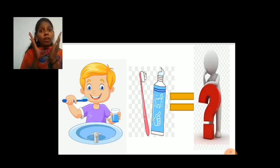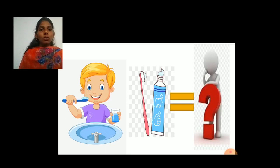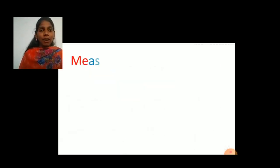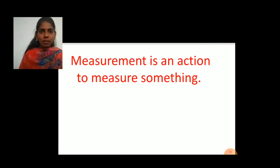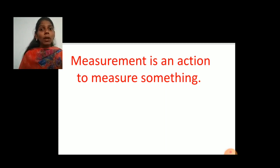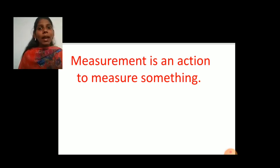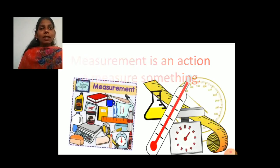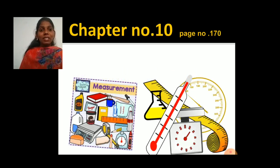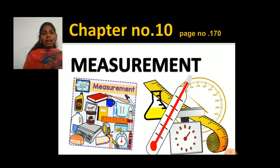When we measure something, that action is called measurement. So, measurement is an action to measure something. Our next chapter is measurement. In this chapter, we will get all the answers to your questions — like how long that bat is, what is the weight of that ball, how long your toothbrush is. Our next chapter is measurement, chapter number 10, and in your maths textbook it is on page number 170.